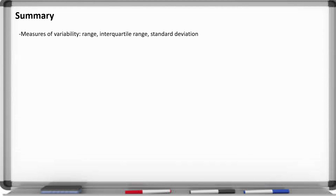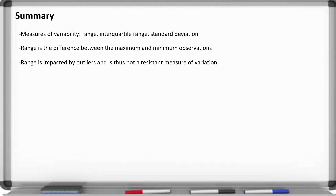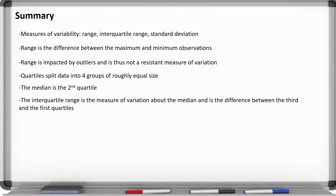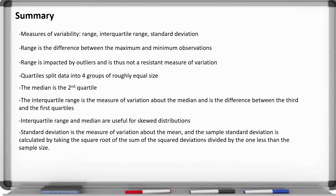To summarize the lesson: we talked about three ways to measure variability — range, interquartile range, and standard deviation. The range is the difference between maximum and minimum and is impacted by outliers, so it's not a resistant measure. Quartiles split data into four groups of roughly equal size, and the median is the second quartile. The IQR is Q3 minus Q1, measures variation about the median, and is resistant to outliers — useful for skewed distributions. The standard deviation measures variation about the mean; it equals the square root of the sum of squared deviations divided by n minus 1. Mean and standard deviation are reported for roughly symmetric distributions, while IQR and median are reported for skewed distributions.